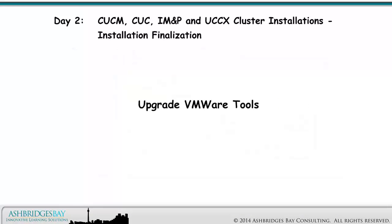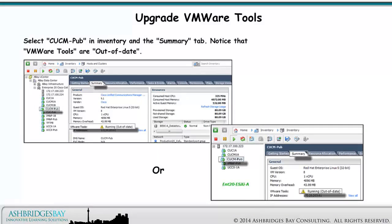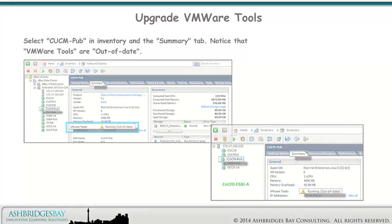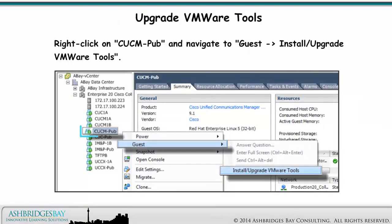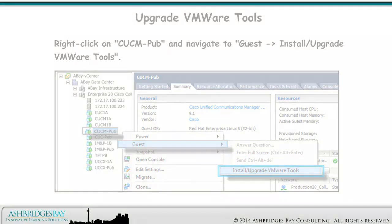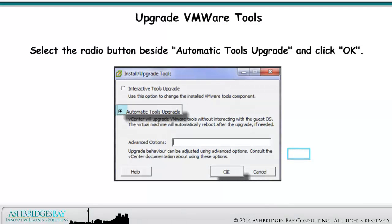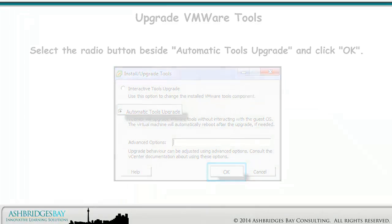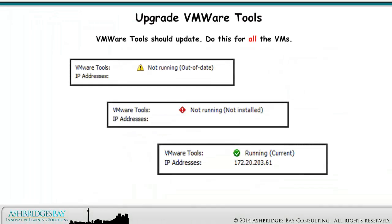We'll finish by upgrading VMware Tools. Select CUCMPUB in Inventory and the Summary tab. Notice that VMware Tools are out of date. Right-click on CUCMPUB and navigate to Guest > Install/Upgrade VMware Tools. Select the radio button beside Automatic Tools Upgrade and click OK. VMware Tools should update — do this for all the VMs.